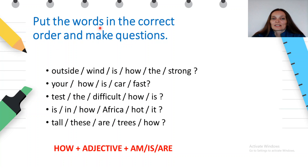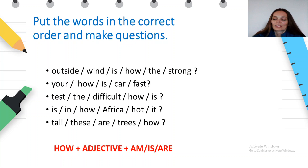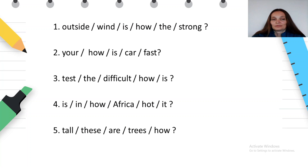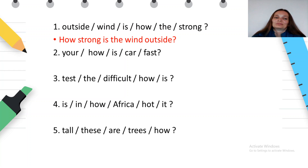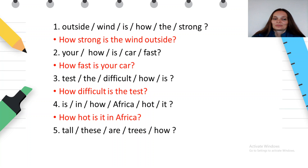Put the words in the correct order and make questions. Don't forget the rule — the question starts with the word 'how' plus adjective plus am, is, or are. You can now pause the presentation and write the answers in your notebooks. Now let's read and check. The first one: How strong is the wind outside? Number two: How fast is your car? How difficult is the test? How hot is it in Africa? How tall are these trees?